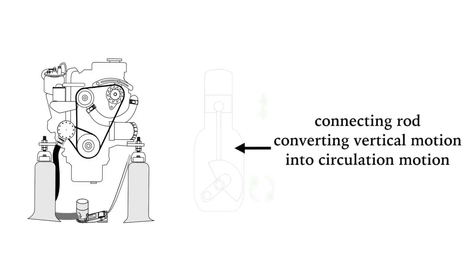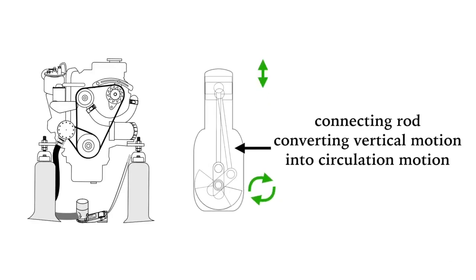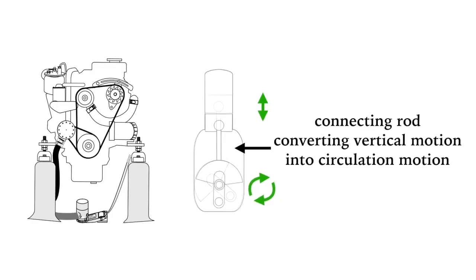The challenge is to convert vertical motion into circular motion and this is done by the connecting rod to the crankshaft, which then eventually turns the propeller, but we'll cover that in another video.